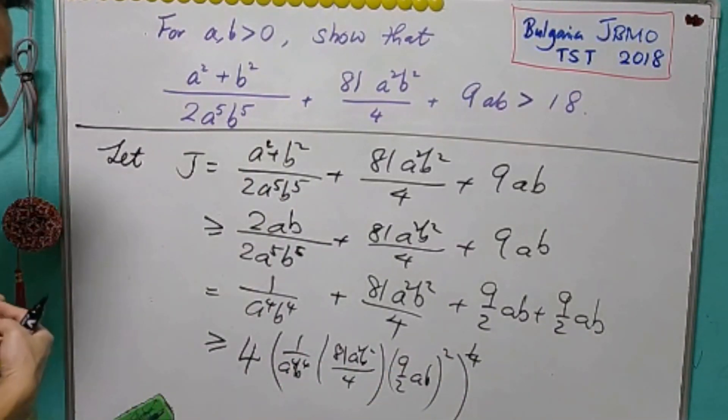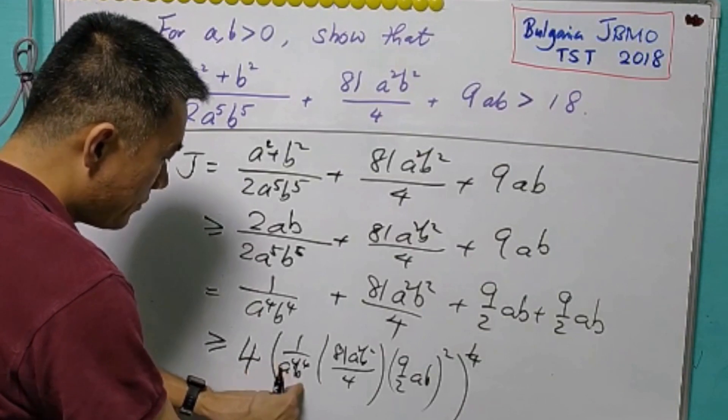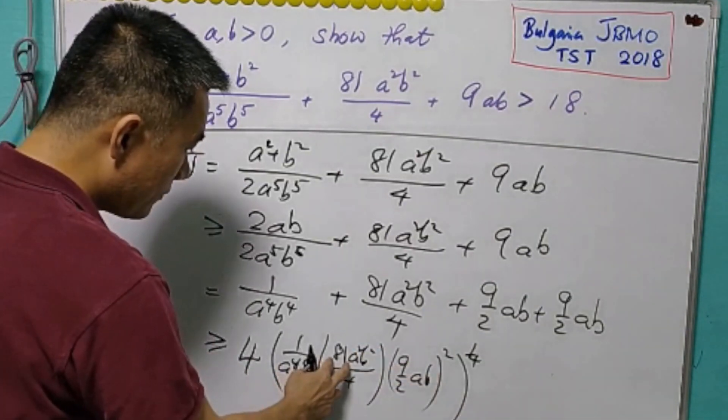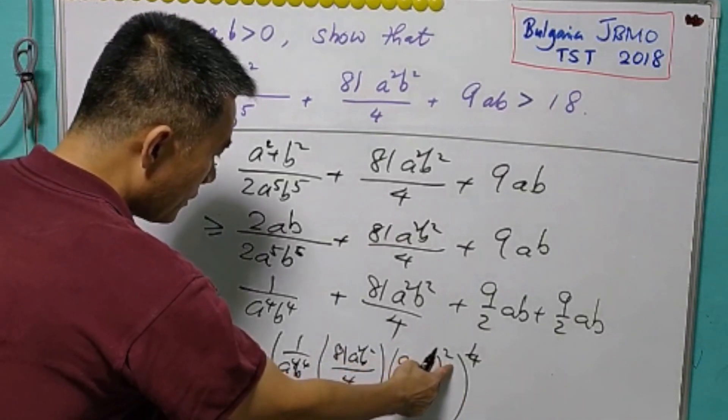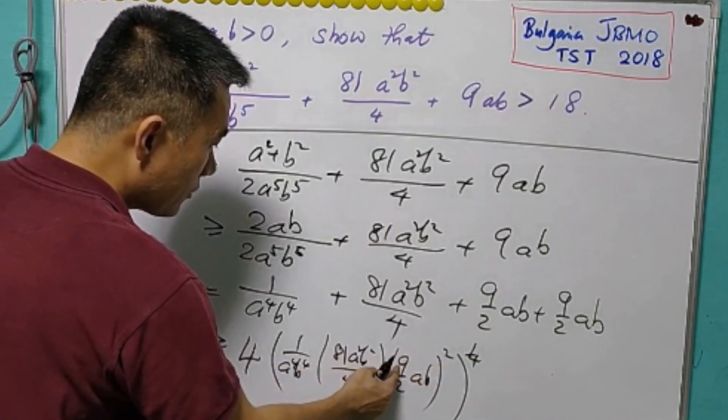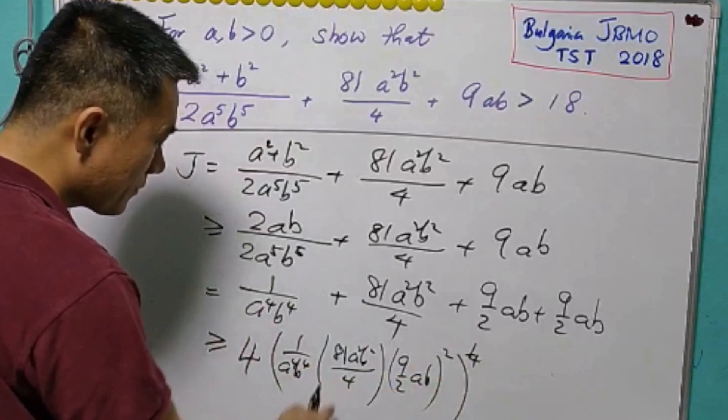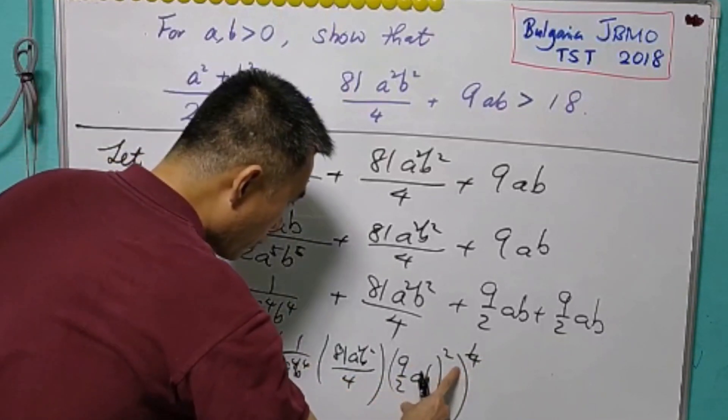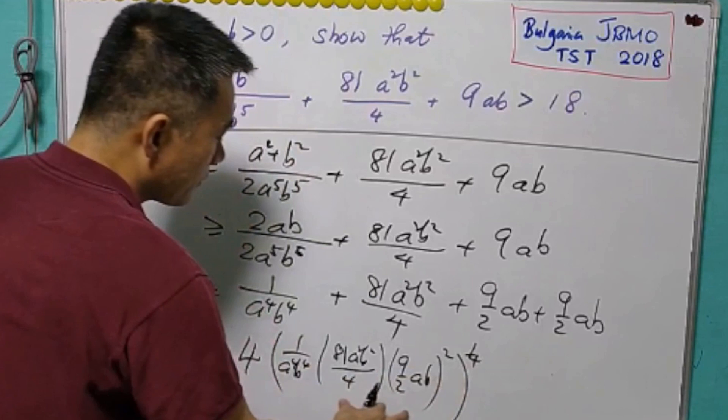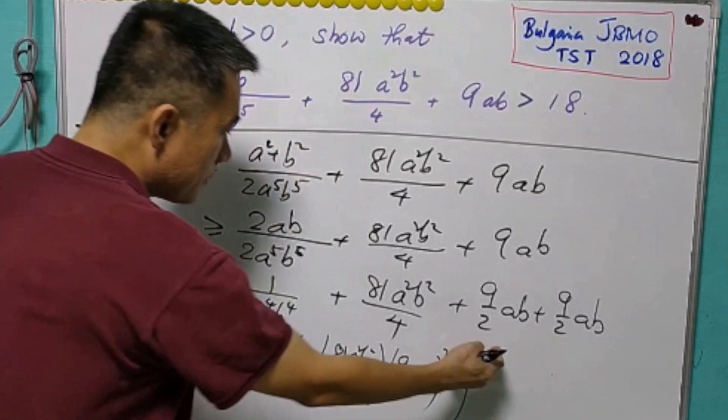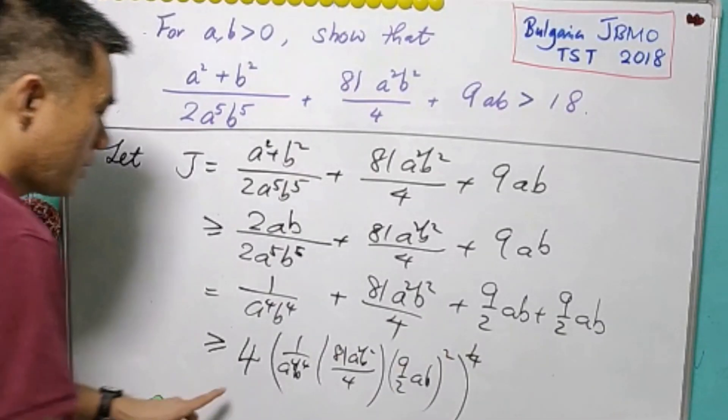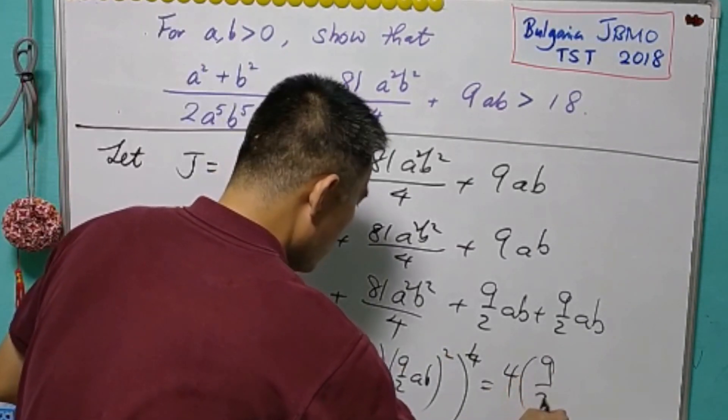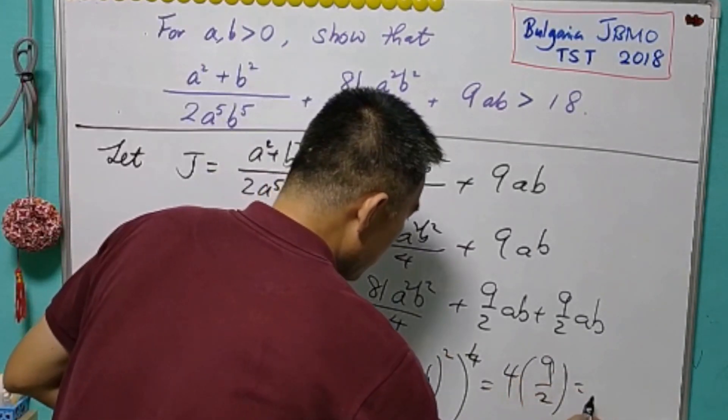As we noticed just now, the terms in a and b will be cancelled off. And we will be left with 81, that is 9 squared. So 9 squared to the power of 1/4 will be just 9. And 4 is actually 2 squared, and we have another 2 squared. Then it will be 2 to the power of 4, then to the power of 1/4, it will be equal to 4. So this will be equal to 4 times 9 over 2. And this will give me 18.